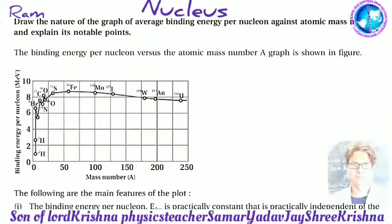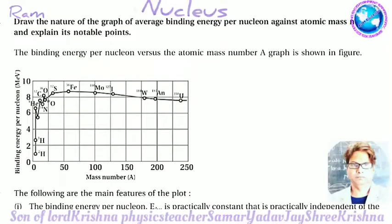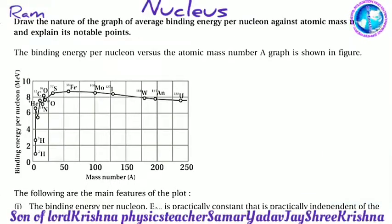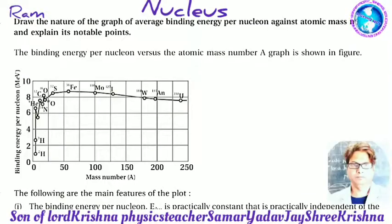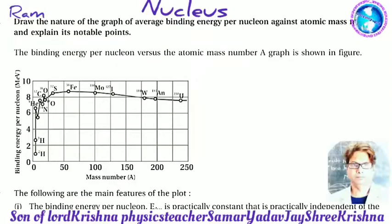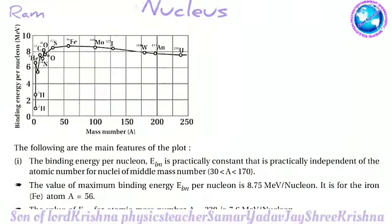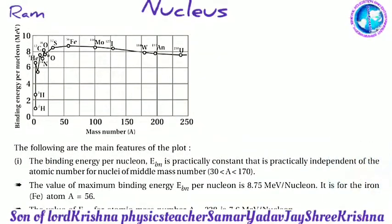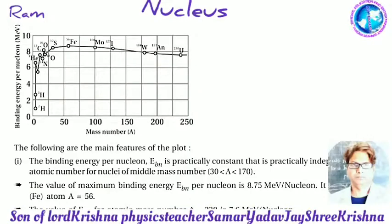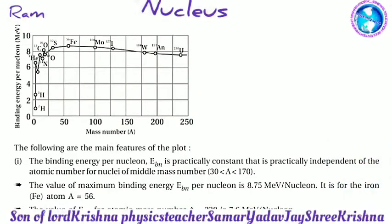Draw and explain the graph of average binding energy per nucleon against atomic mass number. The binding energy per nucleon versus atomic mass number A graph is shown in the figure, with mass number A on the x-axis (values 50, 100, 150, 200, 250) and binding energy per nucleon in MeV on the y-axis (values 0, 2, 4, 6, 8, 10).